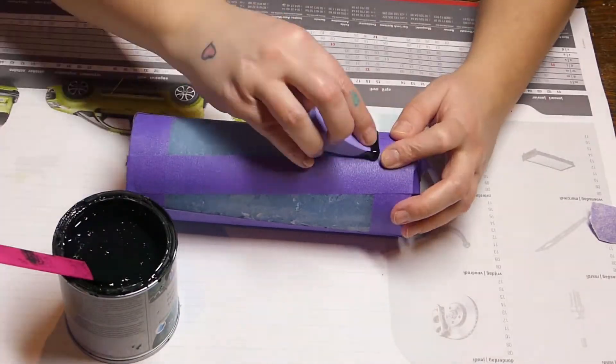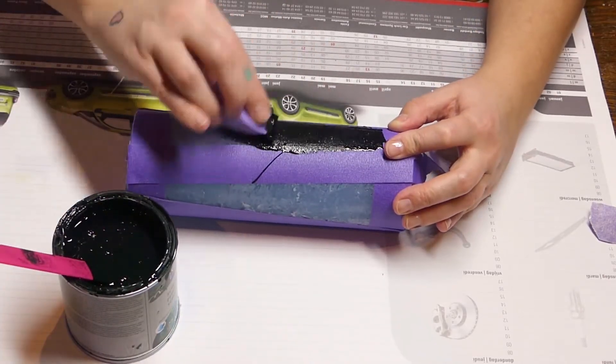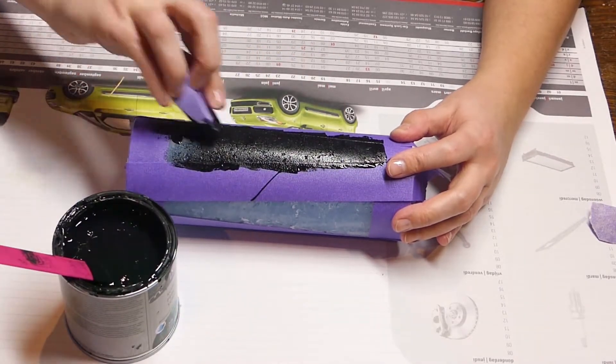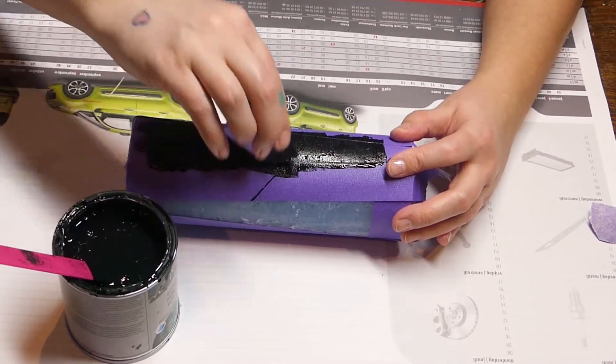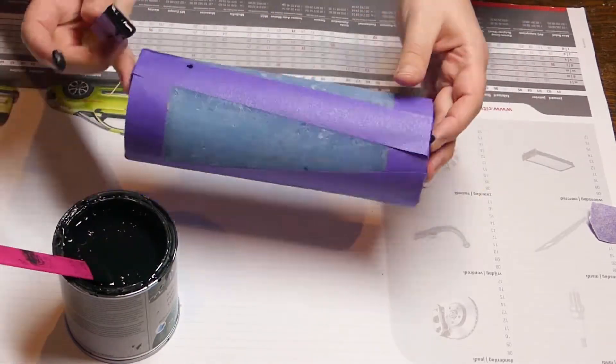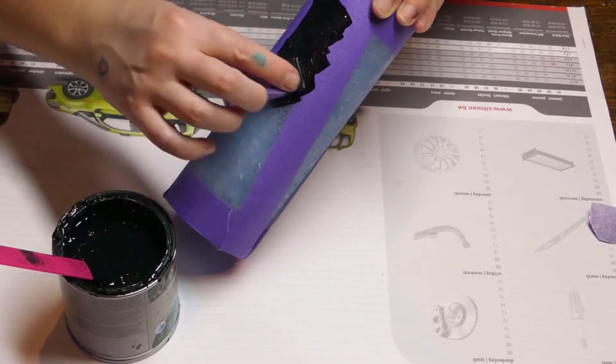Shake and stir your chalkboard paint well, dab your makeup sponge into it and dab it onto your candle. The painter's tape is just to get a clean edge. I prefer using a makeup sponge over a brush because it applies the paint nice and evenly.